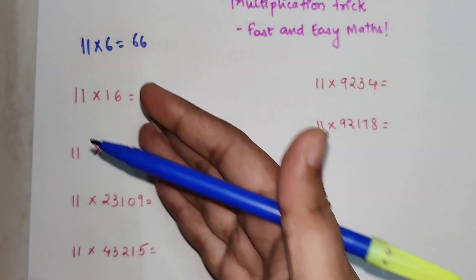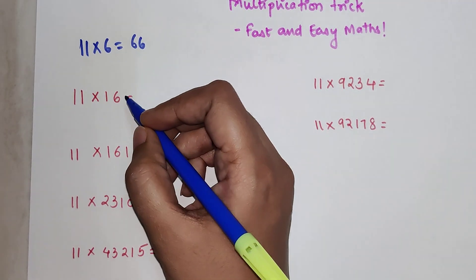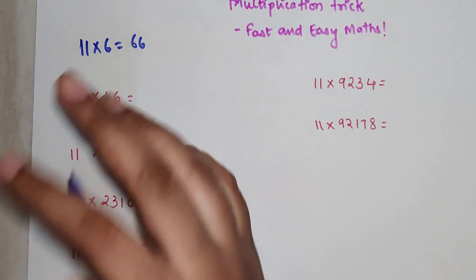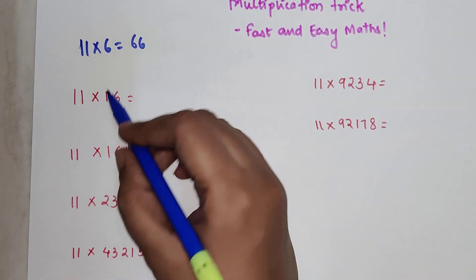But what happens when it comes to 11 with big numbers? When it comes to 16 or a two-digit number or any digit number, what you should do is whatever is the first digit, you write that as your first number of your answer.